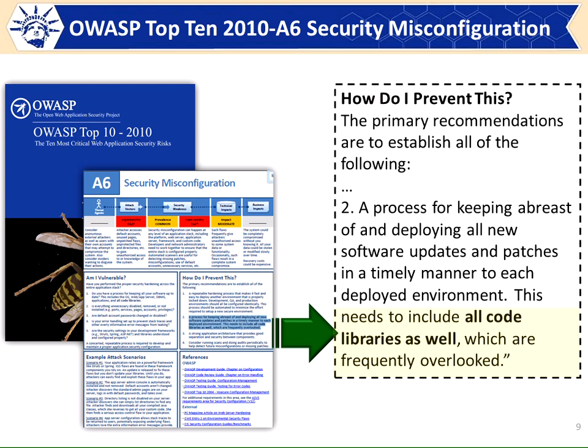How many of you guys read paragraph two of 'how do I prevent this' in A6 of the OWASP Top 10 2010? Zero, right? Because nobody reads the fine print. So in 2013 I said we've got to change this, we've got to raise it up a level. And some people said how can you have this whole new thing in the 2013 Top 10 that we've never heard of? I'm like, well, see paragraph four of A6 — we talked about it there. I even bolded the text. In the fine print. That's why we decided to bring it up.